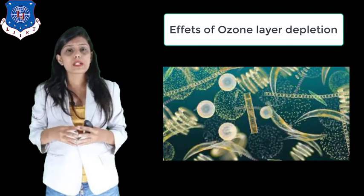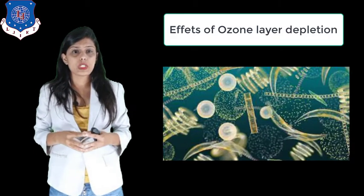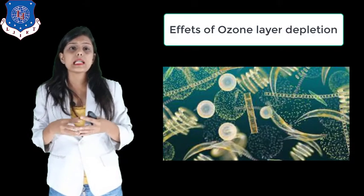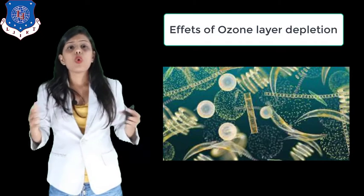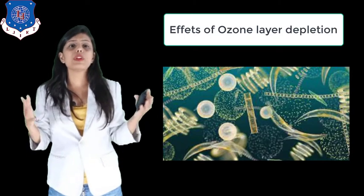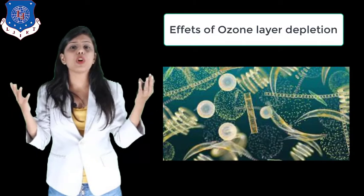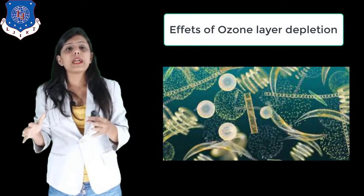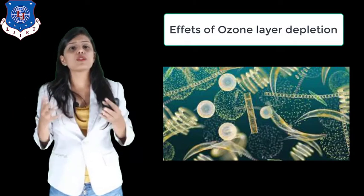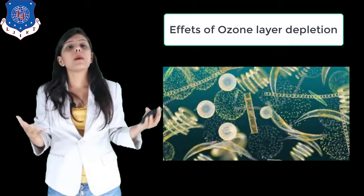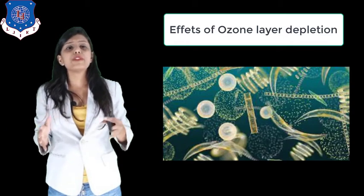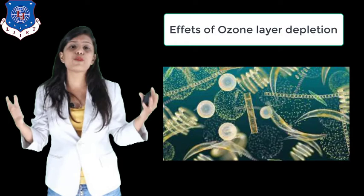The fourth effect is that phytoplankton are sensitive to UV exposure. Ozone depletion will result in a decrease in their population, thereby affecting the population of zooplankton, fish, marine animals, and in fact the whole aquatic food chain.